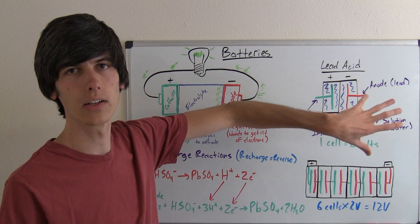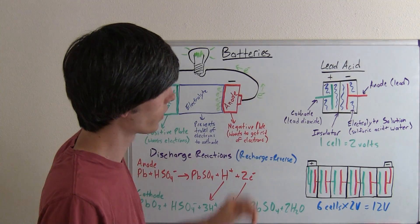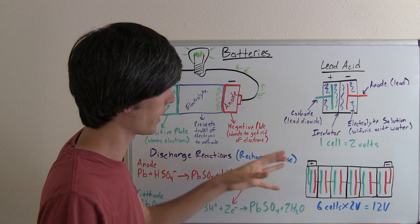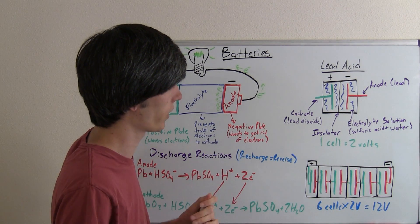So one single cell, like we've shown here, is good for two volts of electricity. So, in our cars we have 12 volt batteries, as you may know, and so how does that happen?